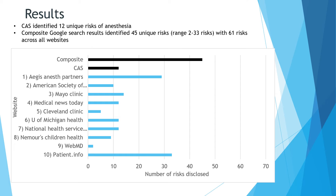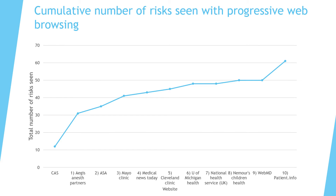Jumping into the results — this plot shows that the composite Google search results provide a more appreciable list of risks than the CAS website did. Even consulting only the first Google search result would still provide a more comprehensive list of risks than the CAS. This second figure shows how the number of risks progressively increases as one searches further into the Google search results, and patients are informed of nearly triple the risks of anesthesia after consulting the top Google search results alone. Patients don't have to visit very many websites to get far more information than the CAS provides.